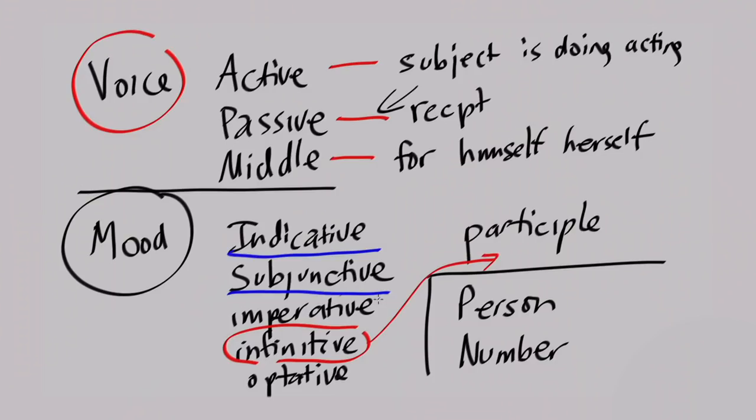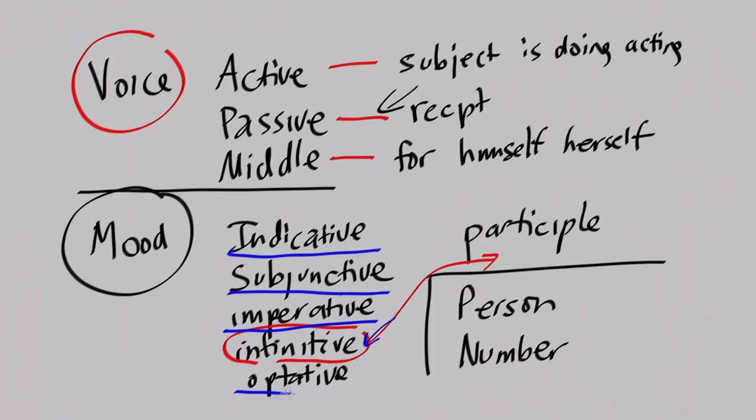Imperative: go, do — it's a command. Infinitive, as I said, doesn't really fit as a mood, but most of the time when verbs are in the infinitive, they have no time limit and no person limit on them. Participle — we've looked at this many times. We've called it the 'magic seahorse' — it's two things stuck together, a verbal adjective. I tend to treat the participle, especially in Greek, mostly like a verb.